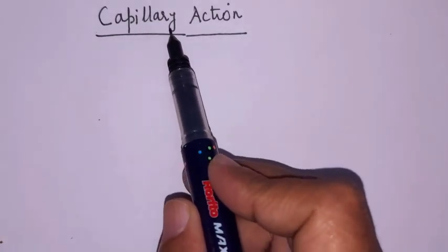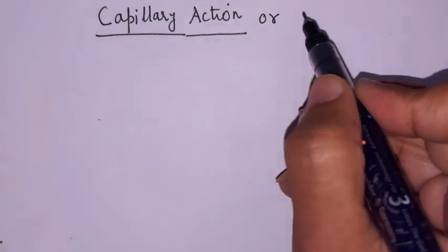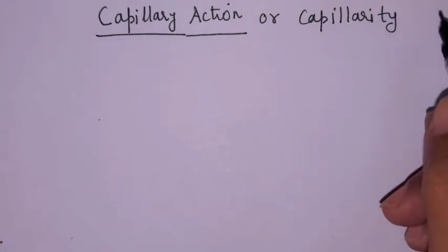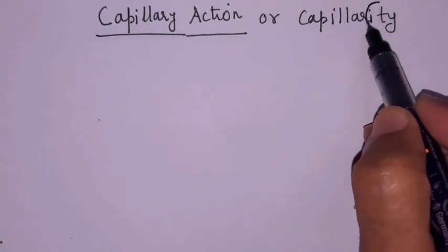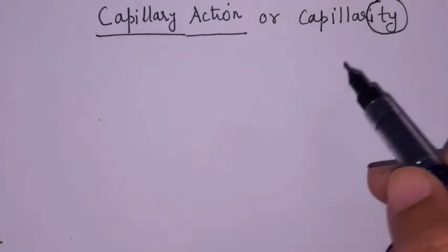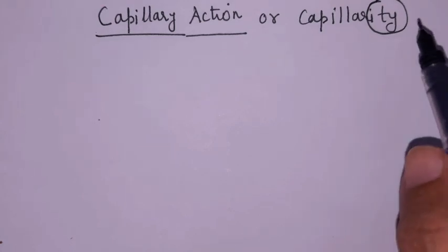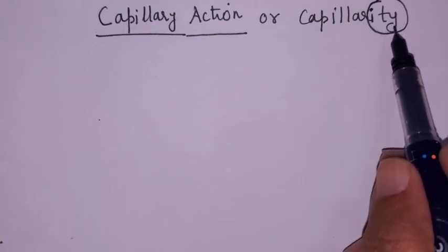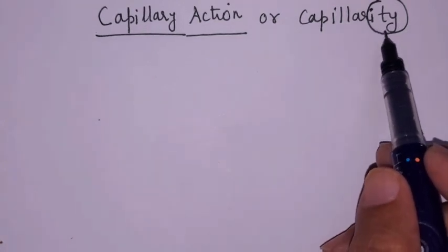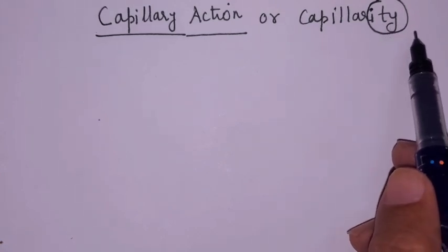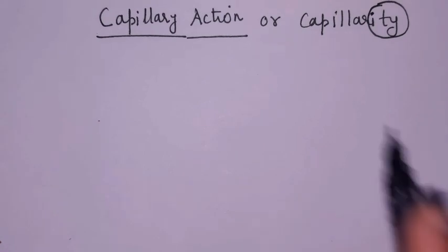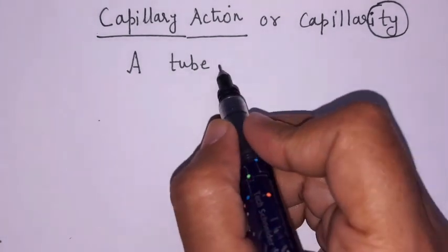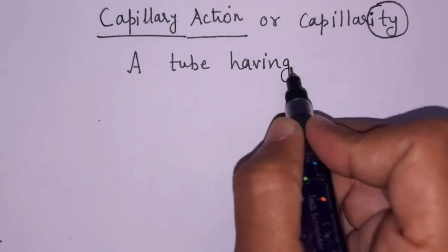Today we are going to study capillary action, which is also called capillarity. In physics, whenever a suffix like elasticity, viscosity, or density comes at the end of an English word, it denotes a property. So capillarity is a property of liquids such that they can rise or fall in a tube having a very fine bore.